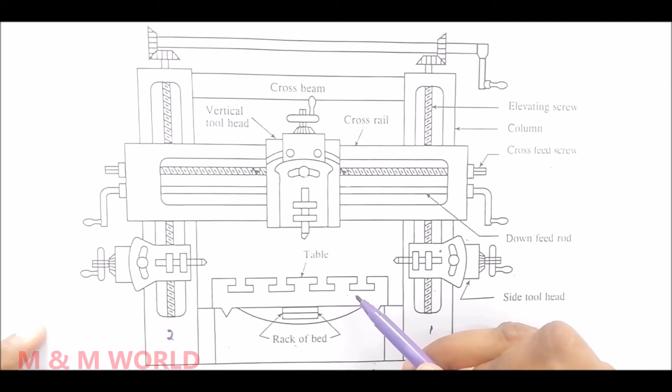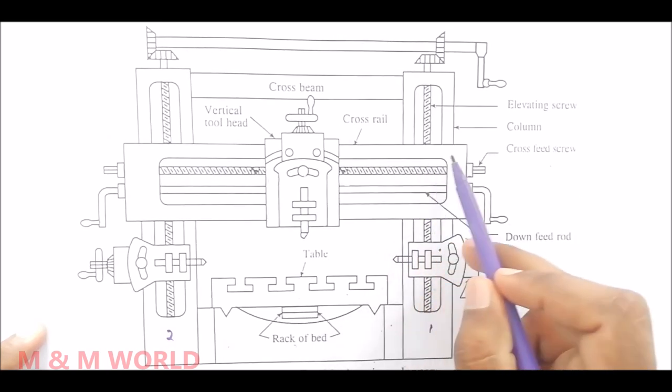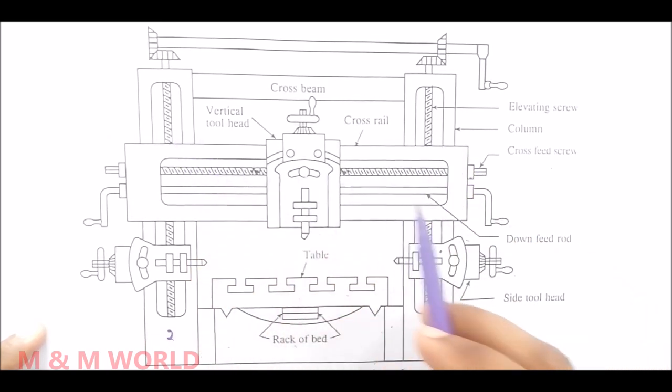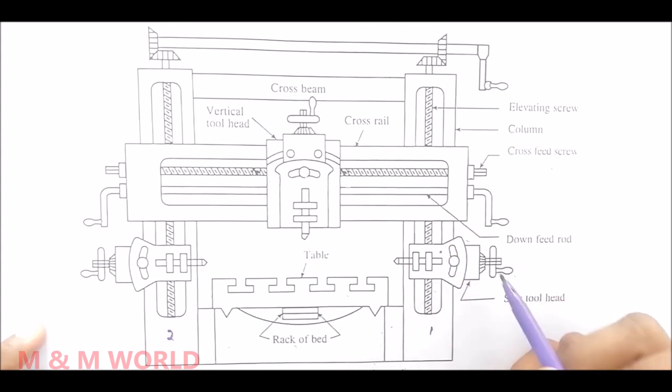When the cross rail is clamped, we have to make sure that it remains absolutely parallel to the top surface of the table. This is necessary to generate a flat horizontal surface on the workpiece. The two elevating screws on the housing are rotated by an equal amount to keep the cross rail in horizontal position.